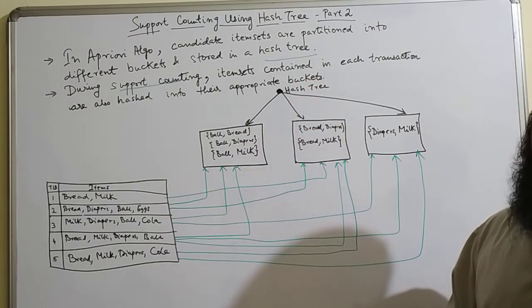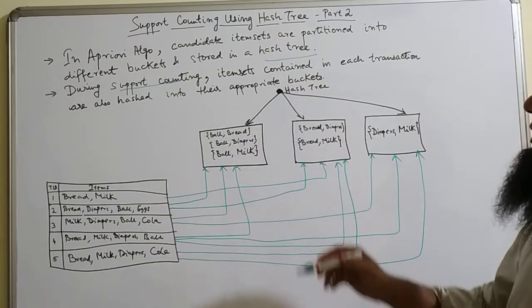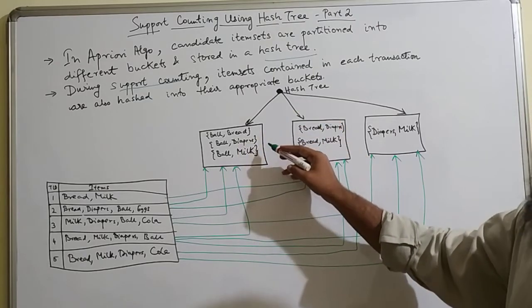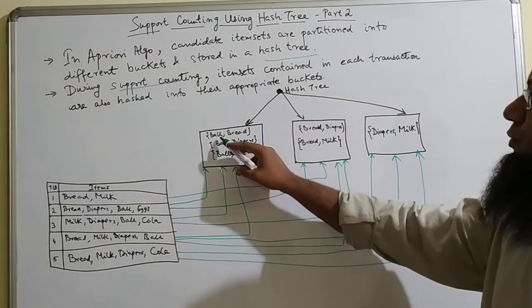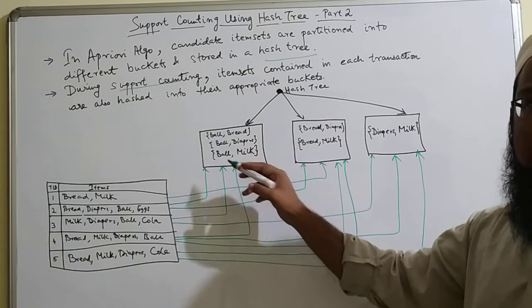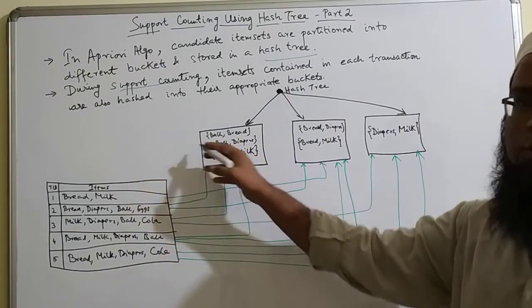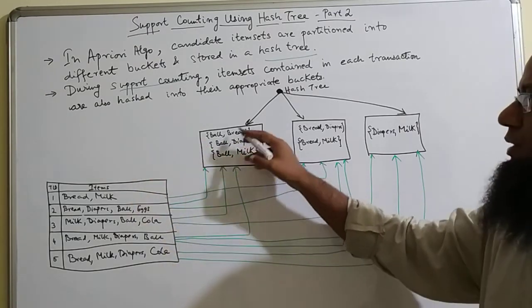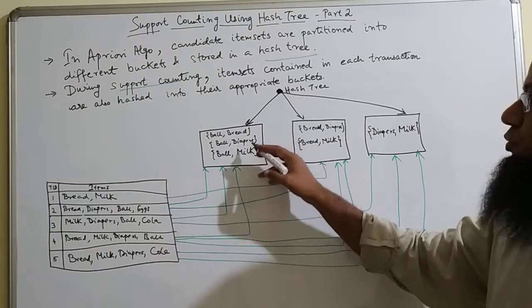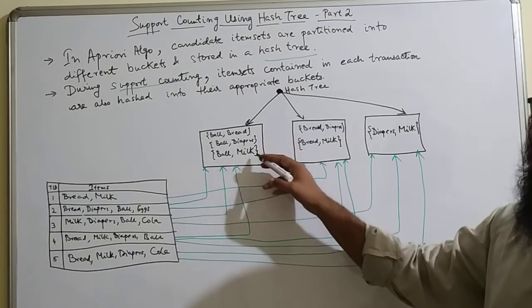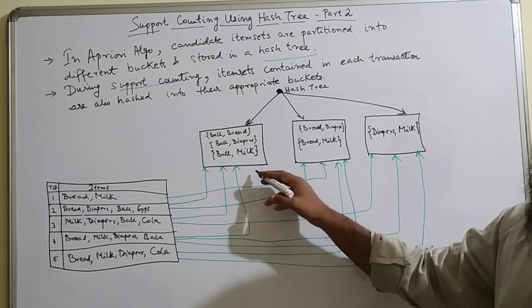So first what happens, in the apriori algorithm, the candidate item sets are put in a bucket. For example, ball with all the different candidate item sets, so here it is a candidate 2 item set which are kept in one bucket. So ball bread, ball diapers, and ball milk are kept in one bucket.